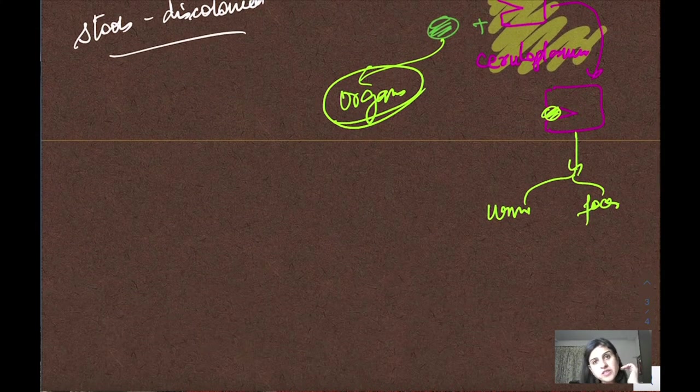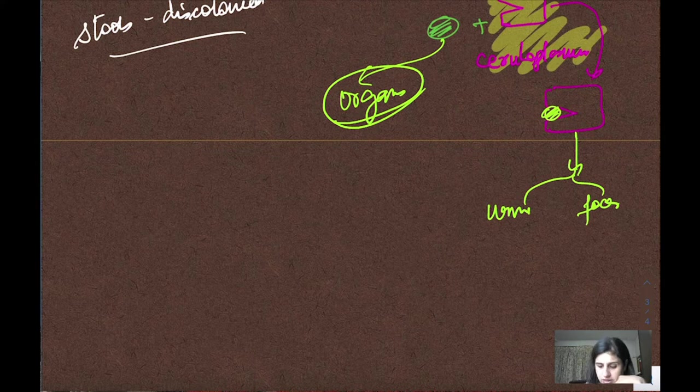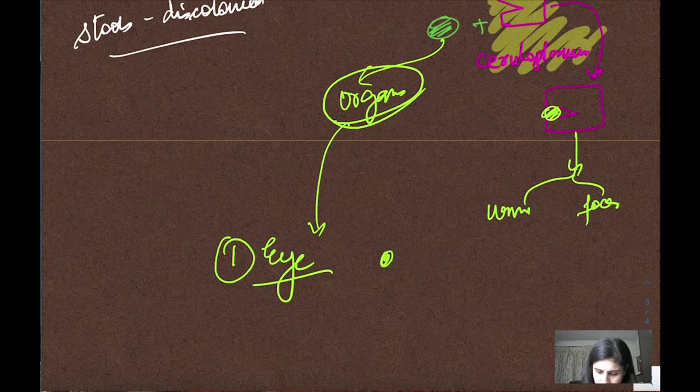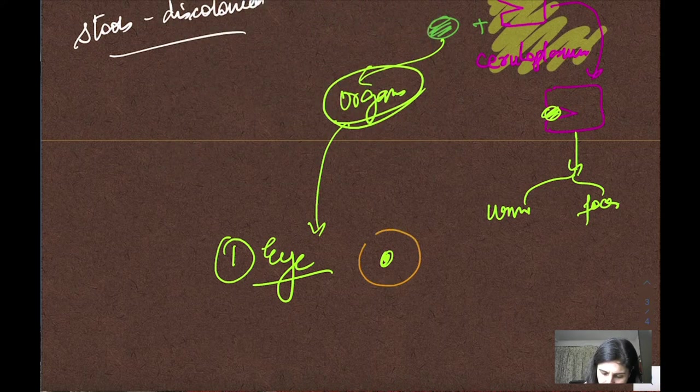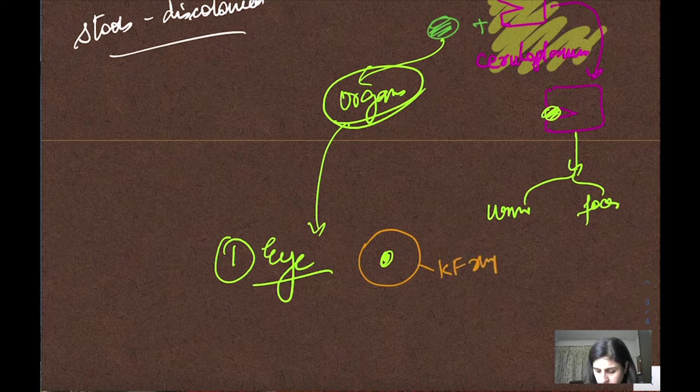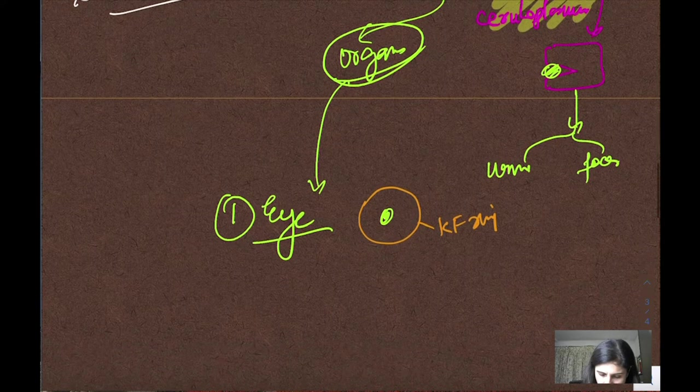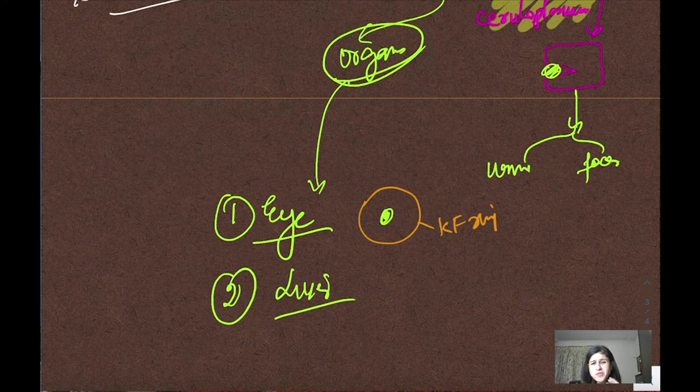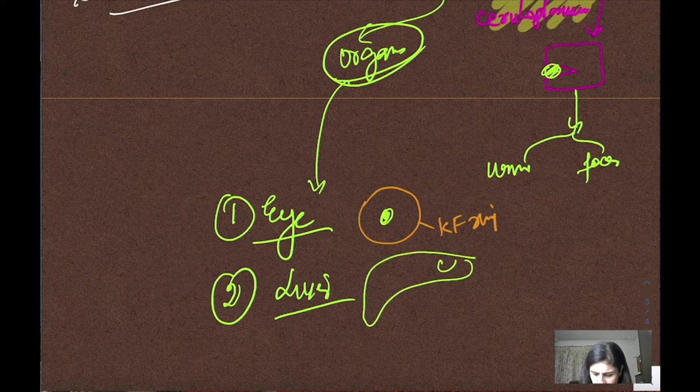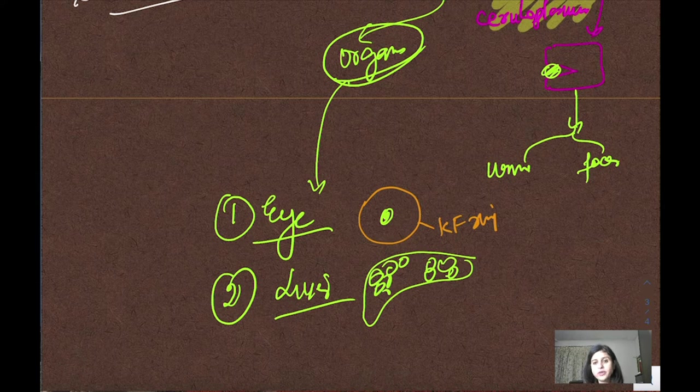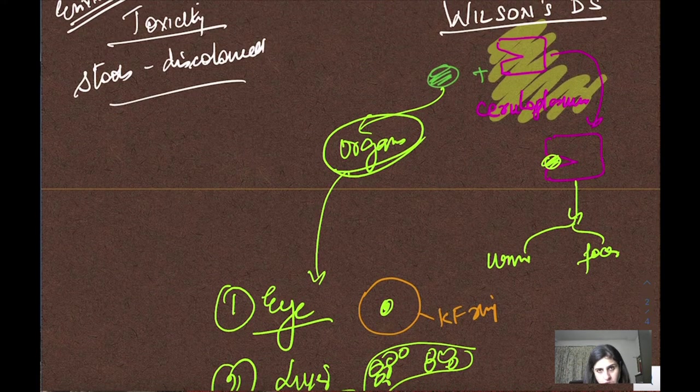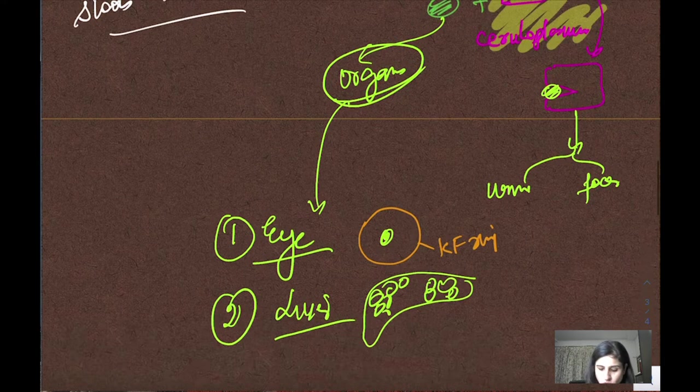It can present in various organs. Typical diagnostic signs: first in the eye, in the periphery of the cornea, there's a ring formed - the KF Kayser-Fleischer ring. The second important organ affected is liver - it can cause liver damage. The liver becomes very nodular. Then CNS, kidneys - it can attack anywhere, but these are the main two organs affected.